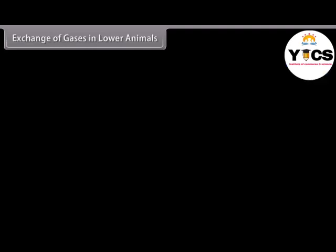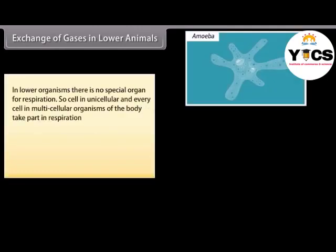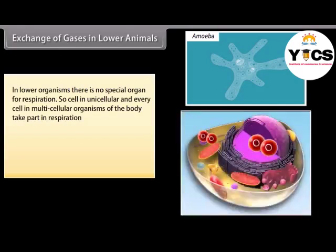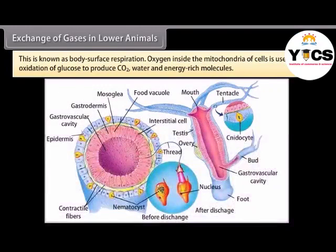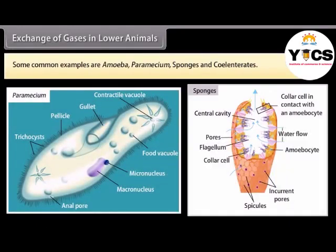In lower organisms, there is no special organ for respiration. Every cell in unicellular organisms, and every cell in multicellular organisms, takes part in respiration. Every cell is in direct contact with water, so there is direct exchange of oxygen from surrounding water and carbon dioxide from body cells — this is known as body surface respiration. Oxygen inside the mitochondria of cells is used in the oxidation of glucose to produce CO2, water, and energy-rich molecules. Common examples are amoeba, paramecium, sponges, and coelenterates.